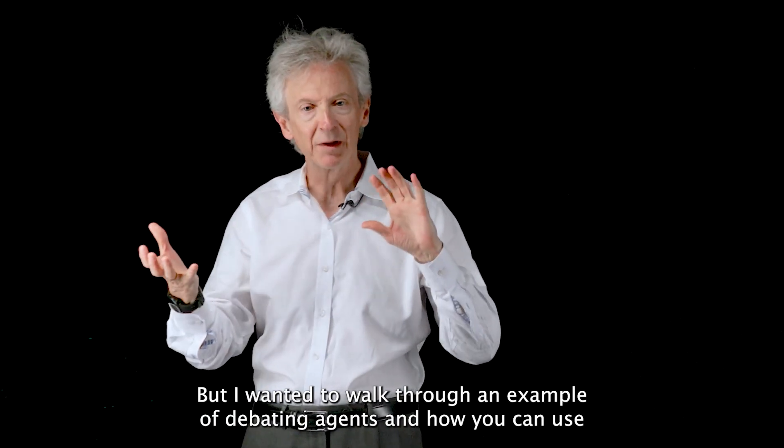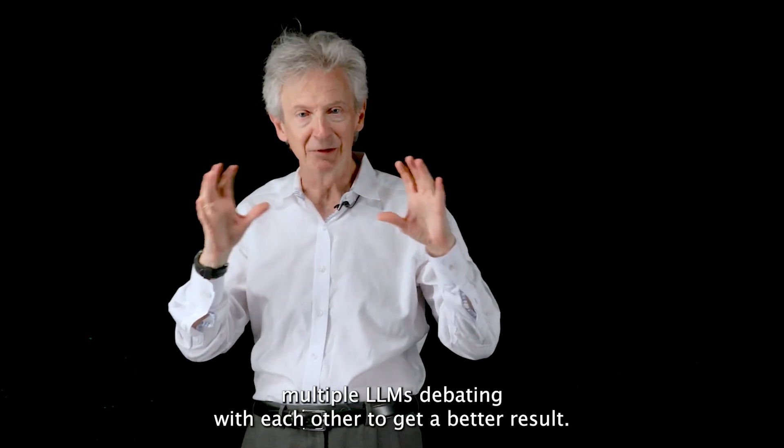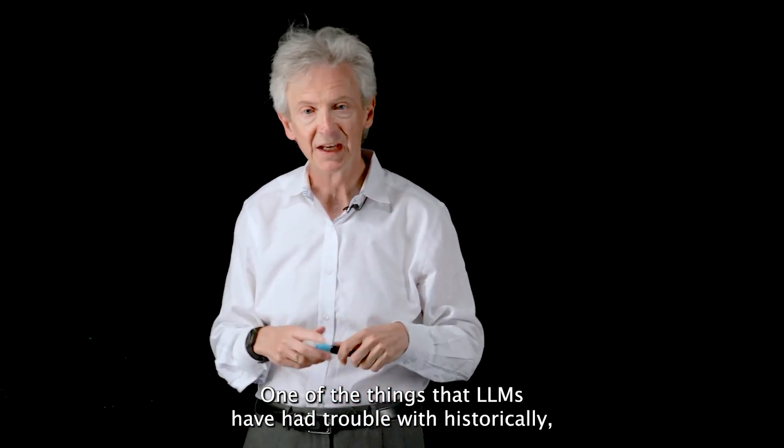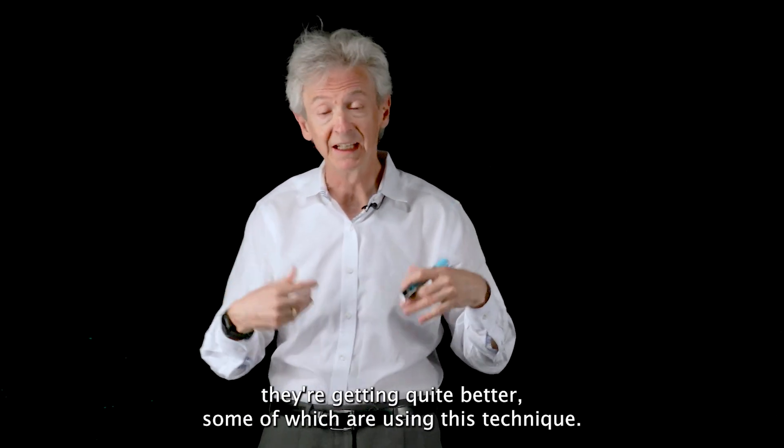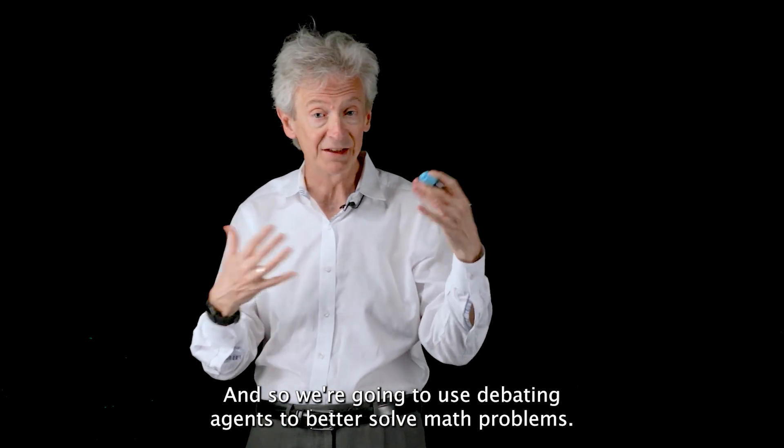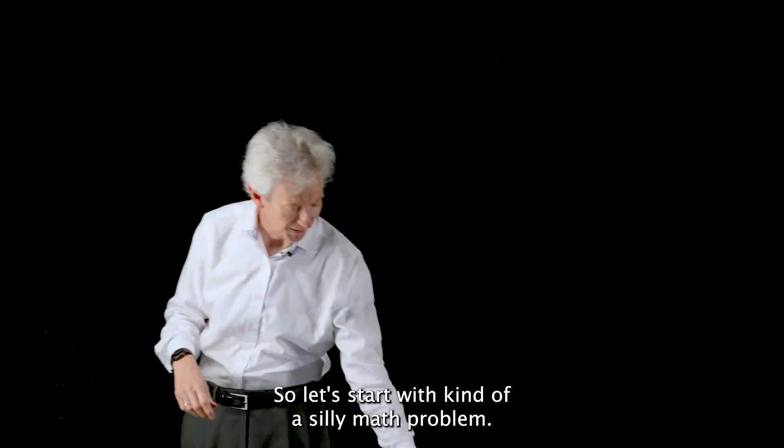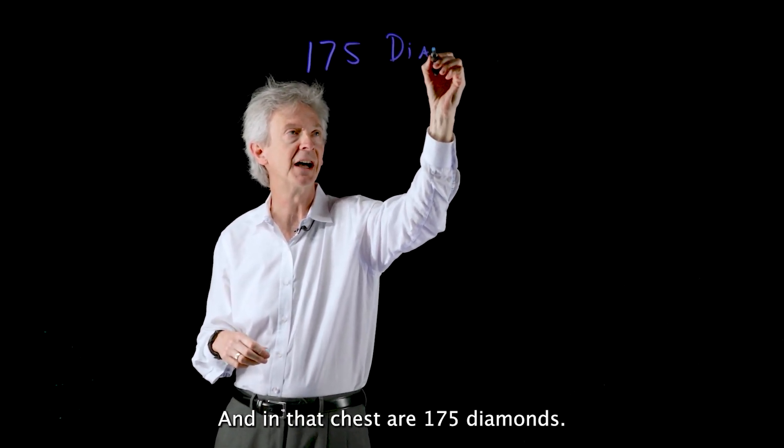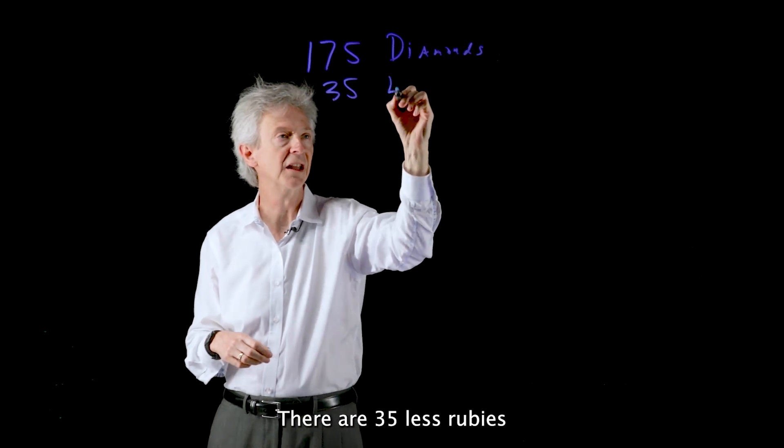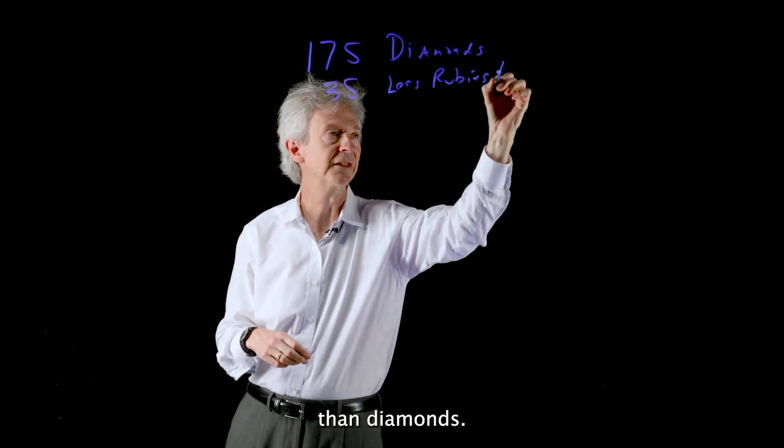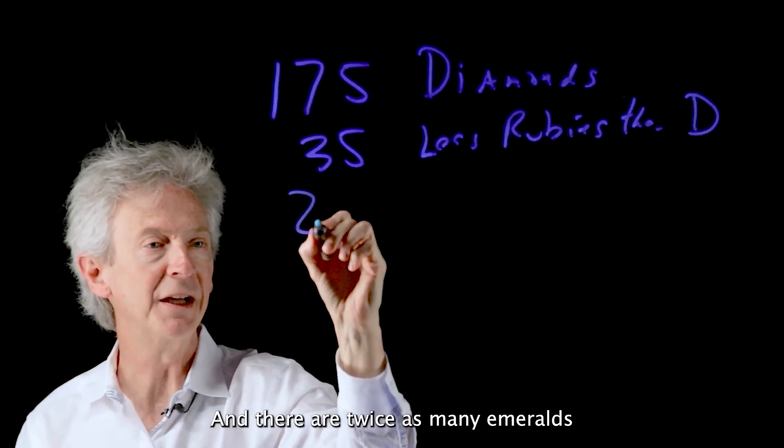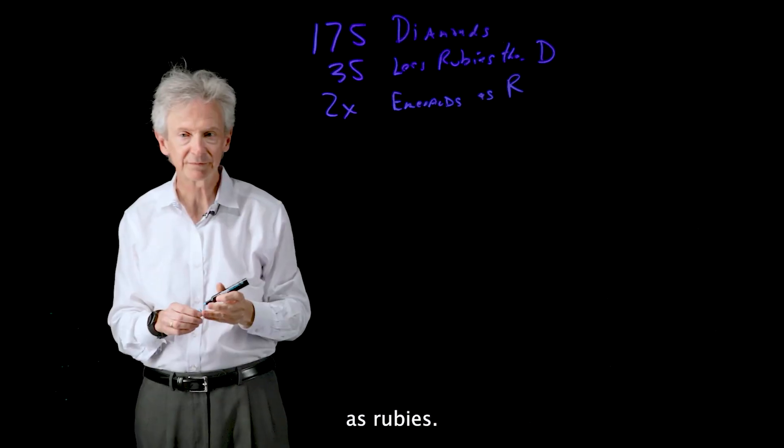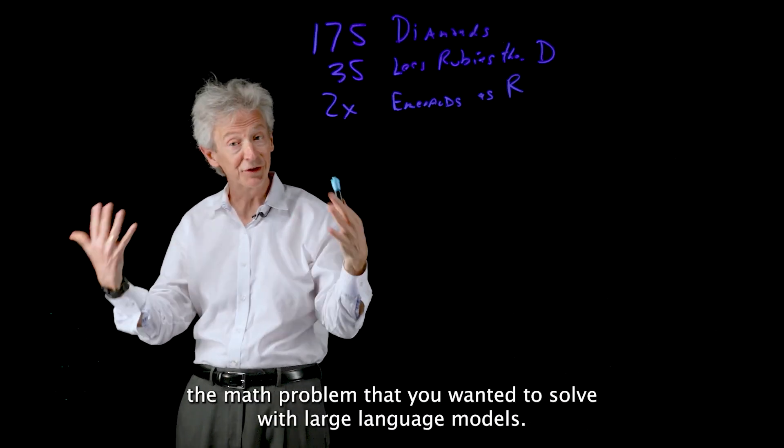But I wanted to walk through an example of debating agents and how you can use multiple LLMs debating with each other to get a better result. And we're going to use a math example. One of the things that LLMs have had trouble with historically, they're getting quite better, some of which are using this technique. So let's say you have a treasure chest that you found at the bottom of the ocean. And in that chest are 175 diamonds. There are 35 less rubies than diamonds. And there are twice as many emeralds as rubies.